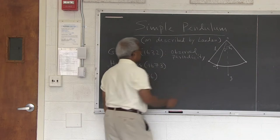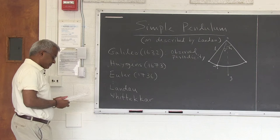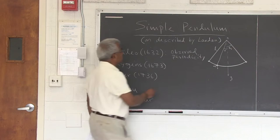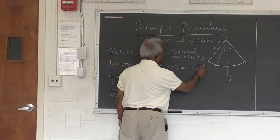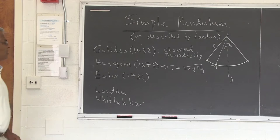It was Huygens in 1673 who derived the classic formula for the period of the pendulum — that is, the period being 2π√(L/G), where L is the length of the pendulum and G is the gravitational constant.